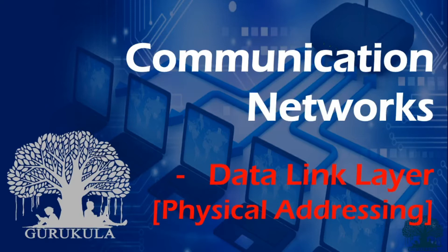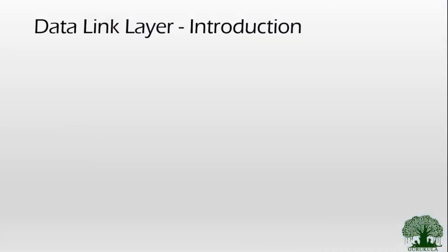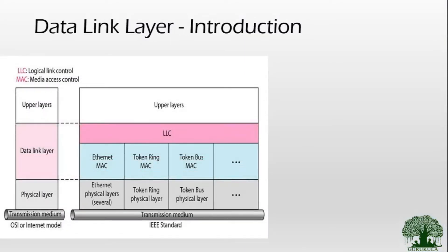To start with the data link layer, we know its position in the OSI model — it is the immediate next layer above the physical layer. The data link layer receives information from the network layer, which is the upper layer. We have previously addressed it as one single layer and seen what functions it offers. Now, as we go deeper, it is important to understand that the data link layer is further classified into two sub-layers.